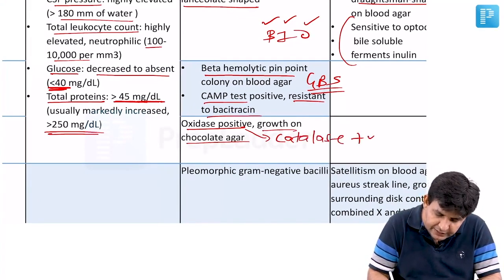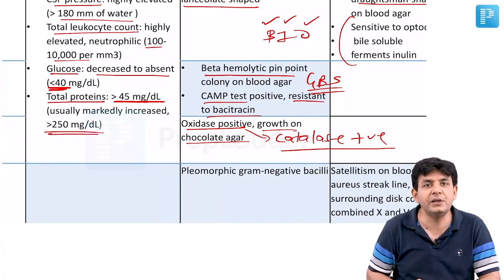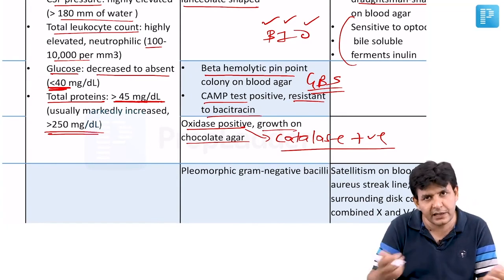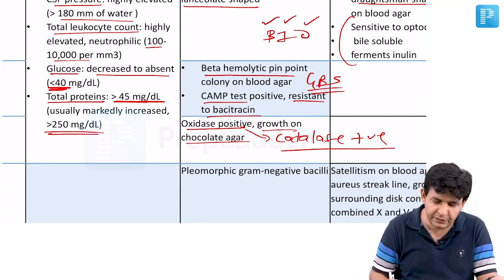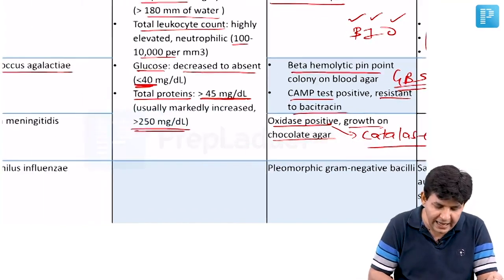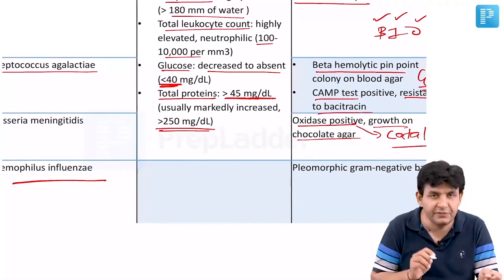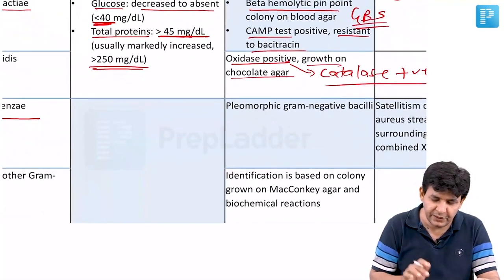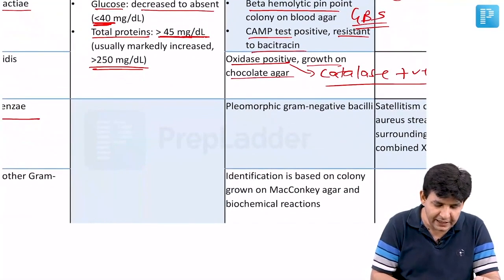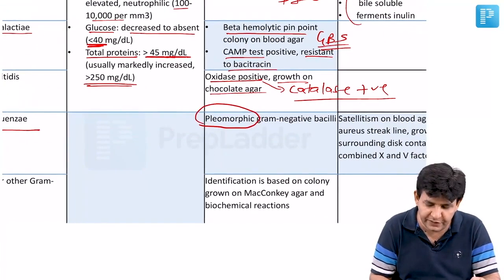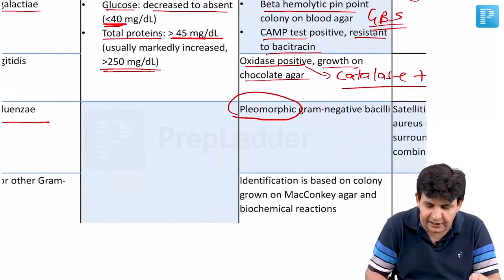Neisseria meningitidis is oxidase positive, catalase positive, grows on chocolate agar, and on Thayer-Martin media, which is essentially a modified chocolate agar. Oxidase positivity is important for both meningococcus and Haemophilus influenzae.